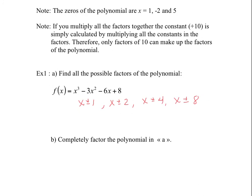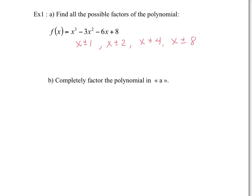To completely factor the polynomial, we need to guess and check using the possible factors. Plug in x equals 1: 1 minus 3 minus 6 plus 8 equals 0. We get lucky — x equals 1 is a zero, so x minus 1 is a factor.